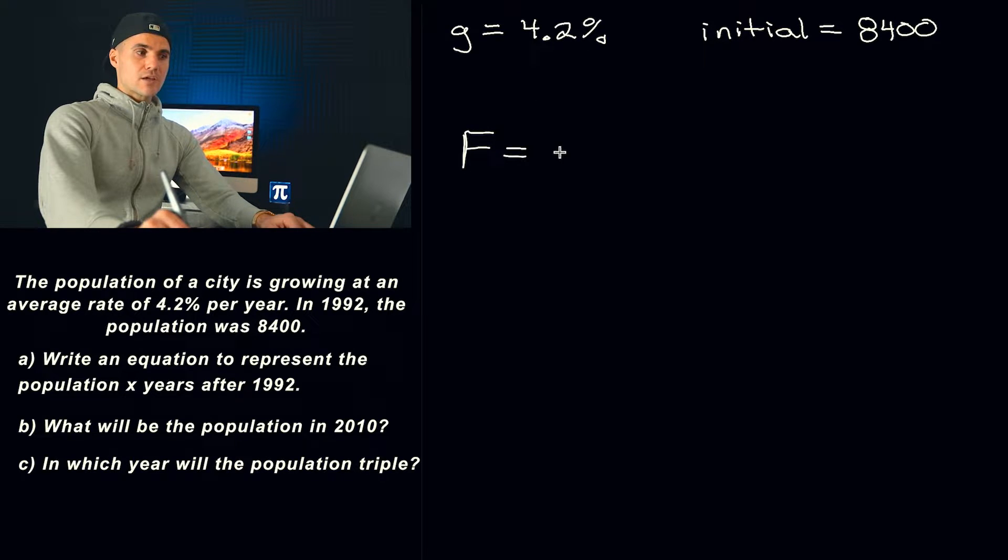We know that the equation we're going to be using is the final amount equals the initial amount, 1 plus r to the power of t. Or in this case, it's going to be x. So if something is growing, this r value is going to be positive. Like in this case, right? The population is growing at 4.2%.